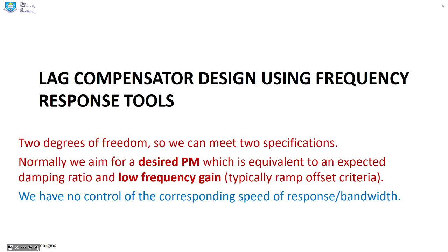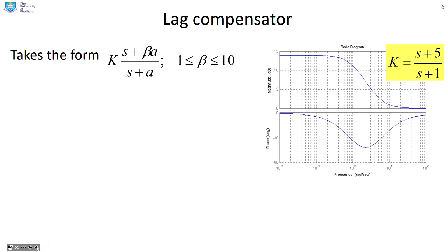Lag compensator design using frequency response tools. A lag compensator has got two degrees of freedom, so we can meet two specifications. The ones we're going to aim for are the desired phase margin — which is analogous to a desired damping ratio — and a desired low frequency gain, which normally is based on a ramp offset criteria. Note we have no control of the corresponding speed of response or bandwidth.